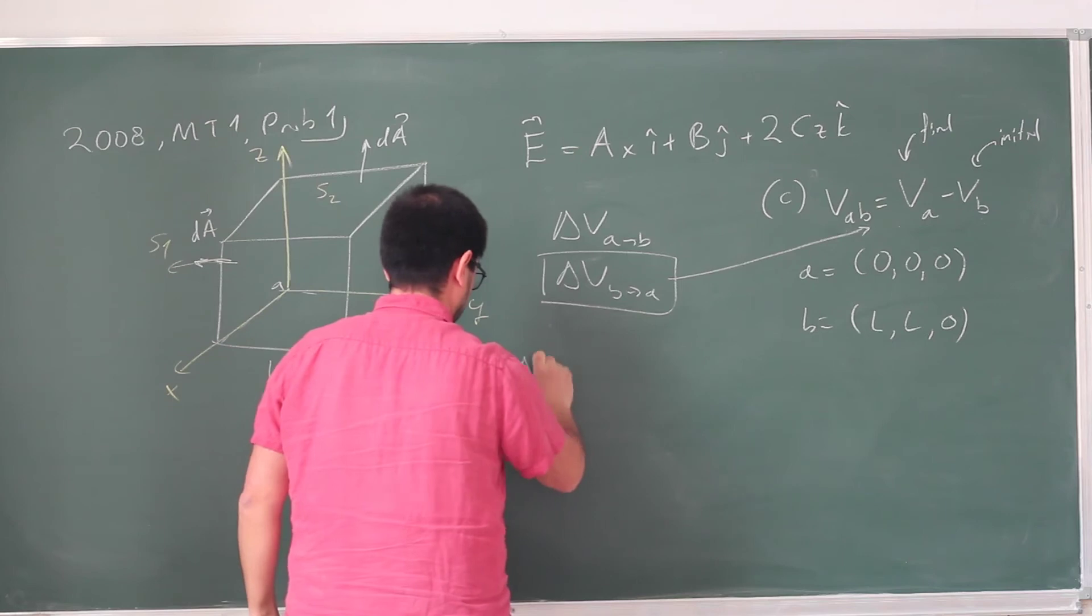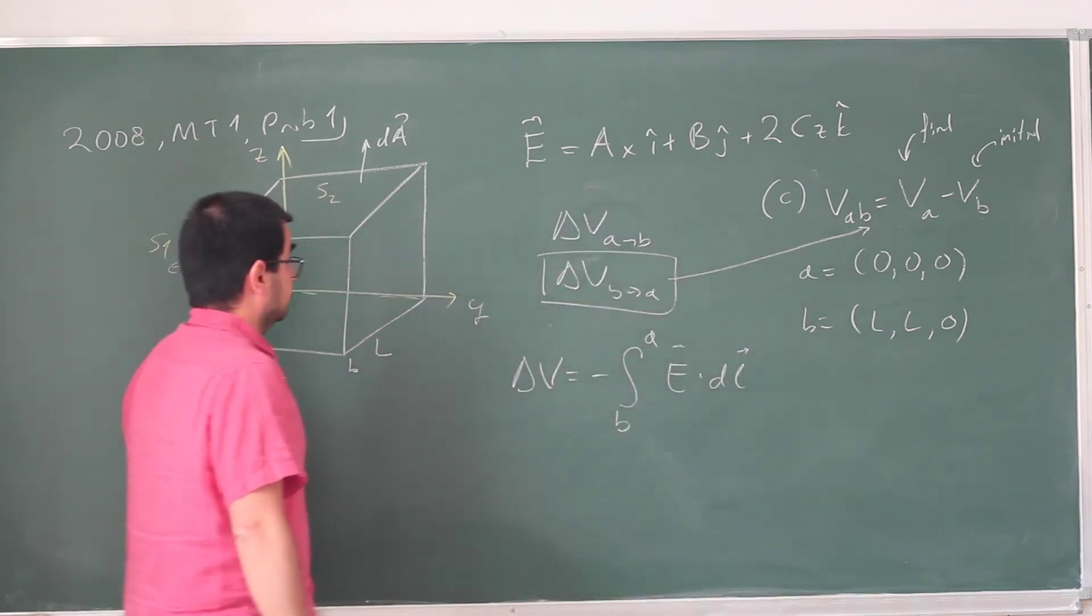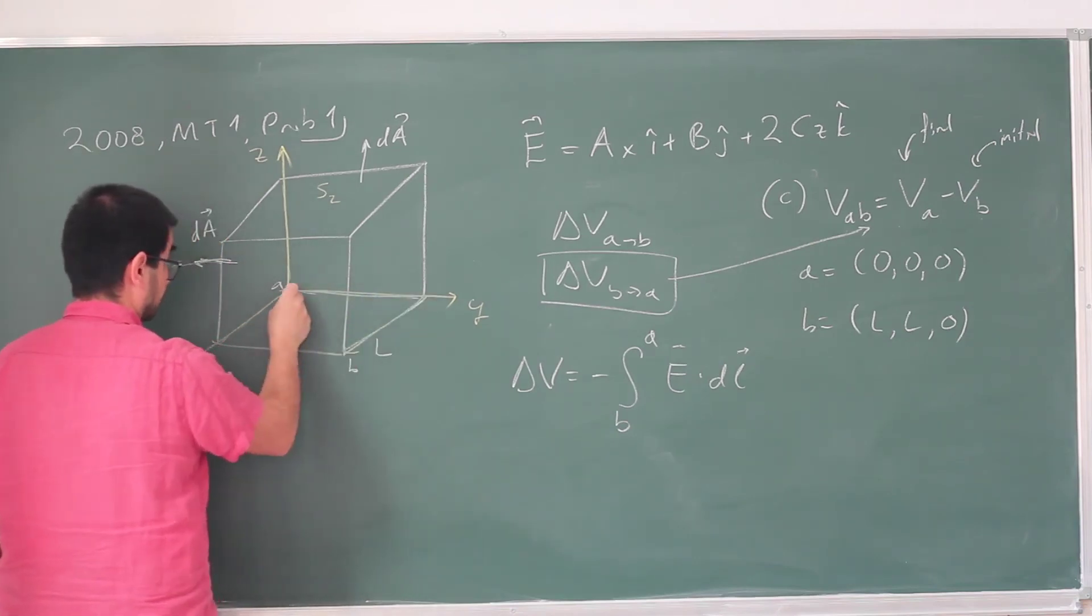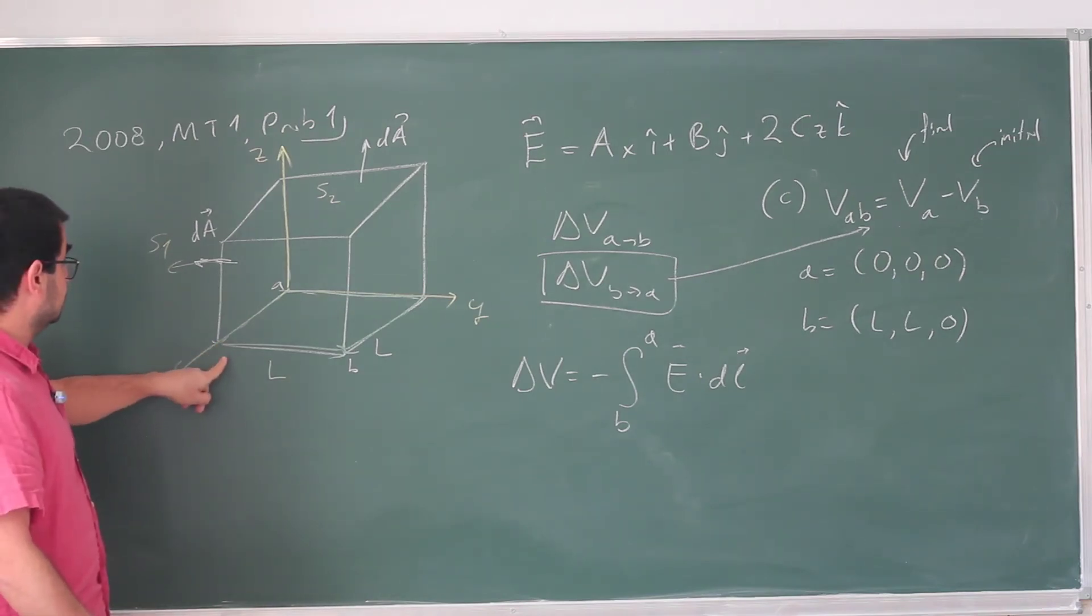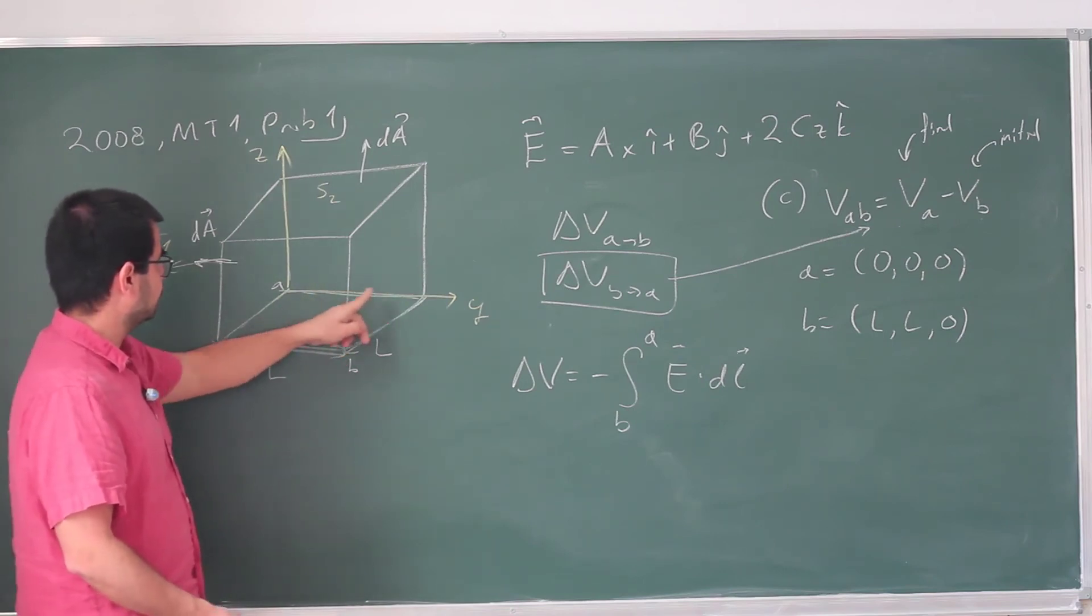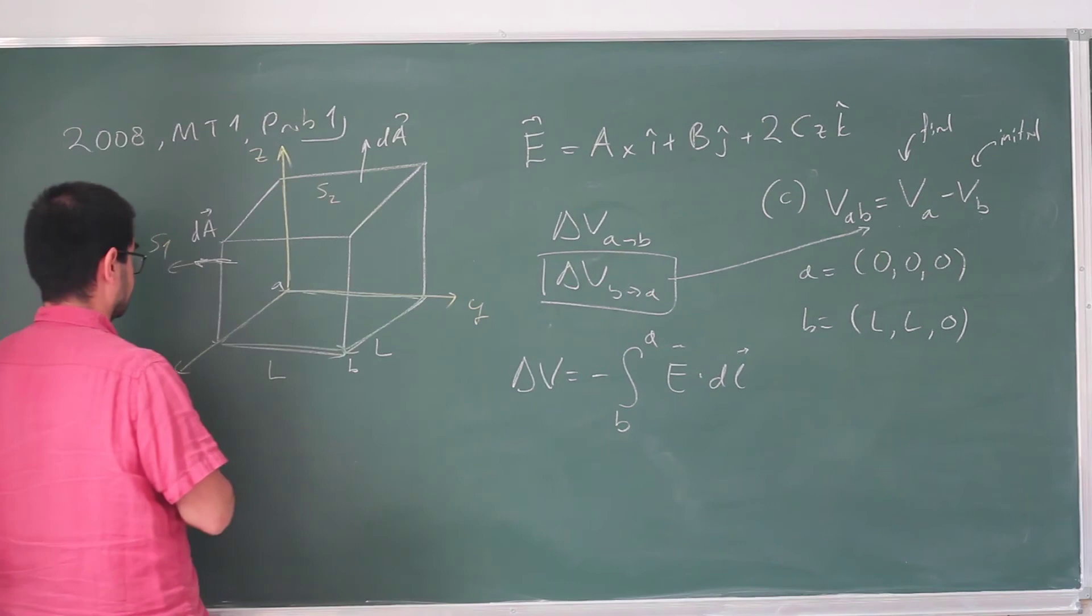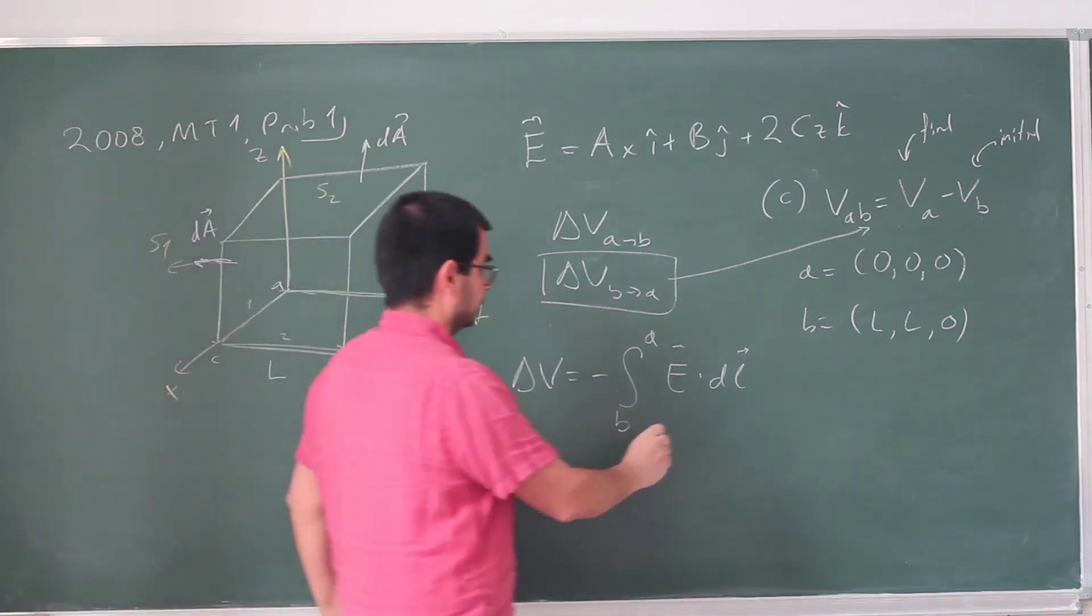So that delta V is going to be minus integral from B to A of E dot dL. And you need to choose a path here. You can choose whatever you want. You can, for example, go straight, but that's not very good because that's a hard integral. You can go this way or you can go this way. So if you go along the x-axis, then only the x component of the electric field is going to survive. I'm trying to figure out which one is simpler. I don't think there is really any advantage choosing one or the other. So let's choose first this one and then that one. I'll put the intermediate point C here. So I'll divide this into two parts.